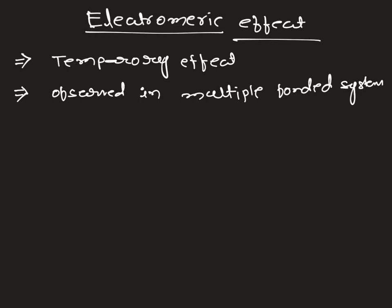What is electromeric effect? In presence of a polar reagent, the pi bonded electrons are migrated to one of the atoms. That we call electromeric effect.